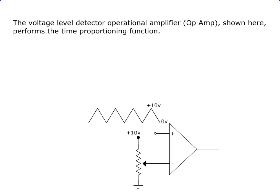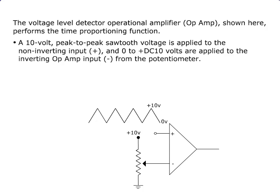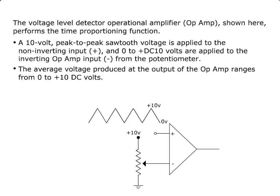The voltage level detector operational amplifier, or op amp, shown here, performs the time proportioning function. A 10 volt peak-to-peak sawtooth voltage is applied to the non-inverting input (positive), and 0 to DC 10 volts are applied to the inverting op amp input (negative) from the potentiometer.